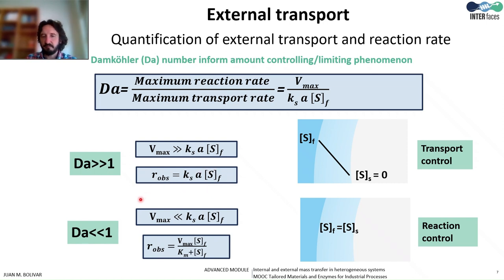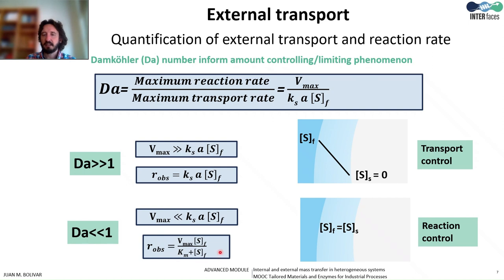On the other side, if the maximum reaction rate is by far lower than the maximum transport rate, then the reaction will be limiting the performance of the catalyst. The velocity that we will observe — that the substrate is getting consumed or the product is getting produced — will be exactly given by the kinetic equation of the enzyme. As in this case the transport is very fast compared with the reaction, no gradient will be observed, so the substrate concentration accessible to the enzyme will be exactly the same as in the bulk.